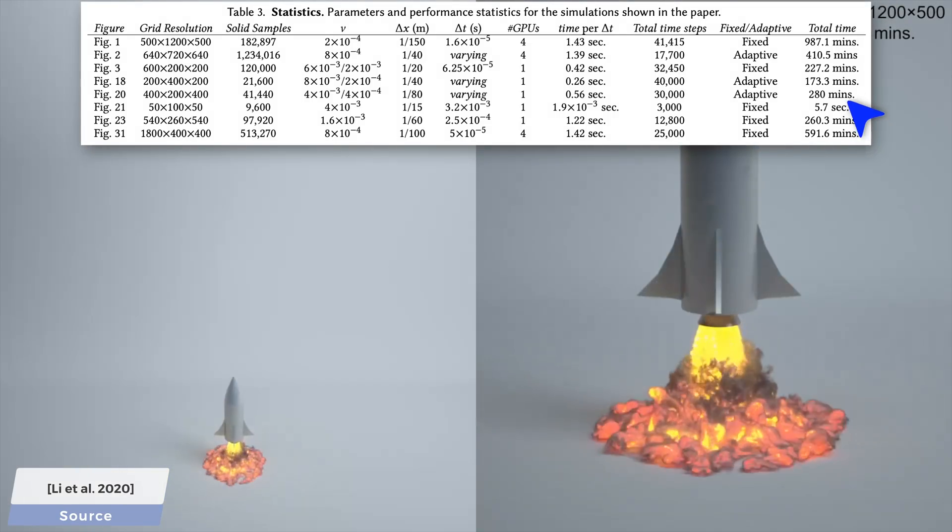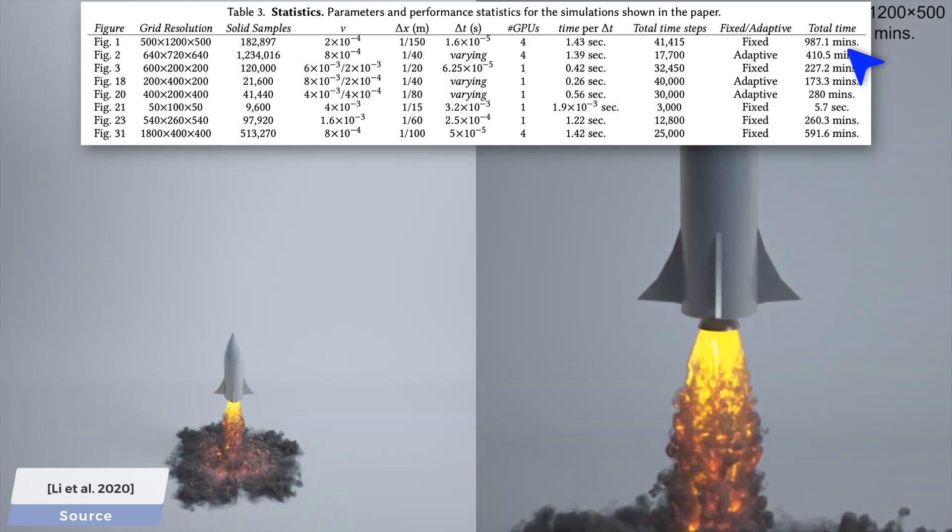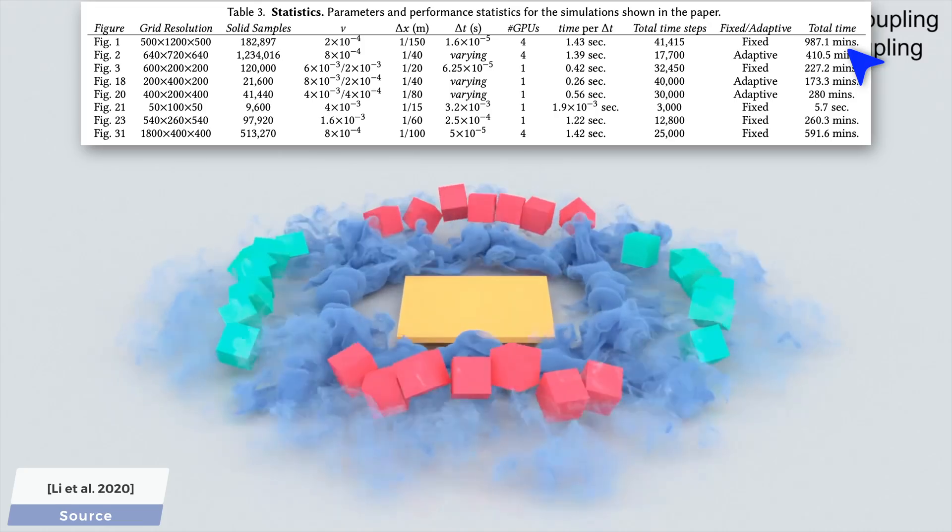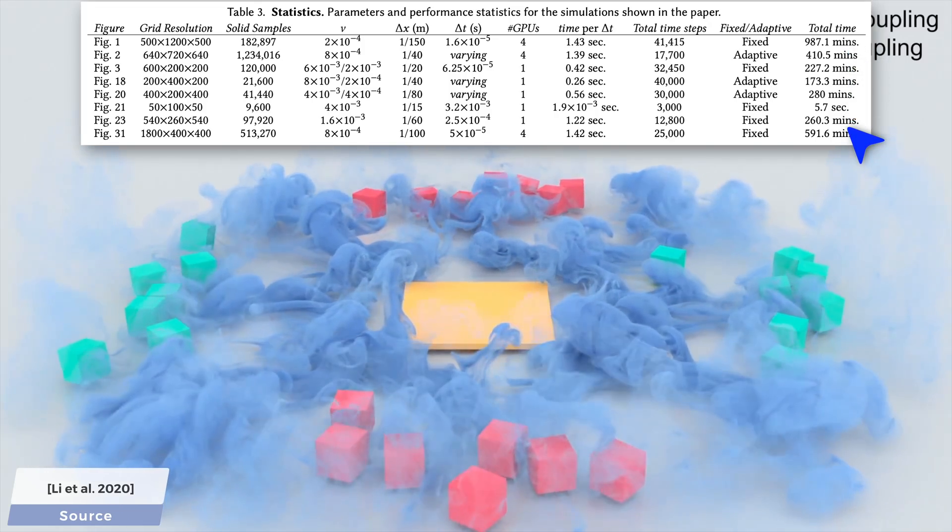The rocket launch scene took the longest with 16 hours, while the falling plate example with the strong draft that threw the boxes around took about 4 and a half hours of computation time.